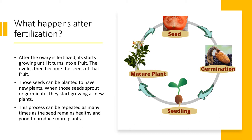What happens after fertilization? After the ovary is fertilized, it starts growing until it turns into a fruit. The ovules then become the seeds of that fruit. Those seeds can be planted to have new plants. When those seeds sprout or germinate, they start growing as new plants. This process can be repeated as many times as the seed remains healthy and good to produce more plants.